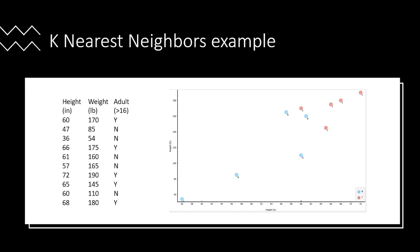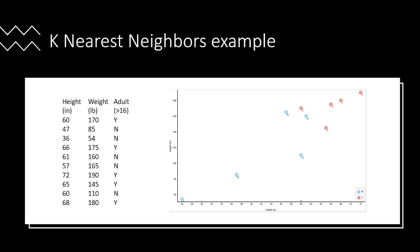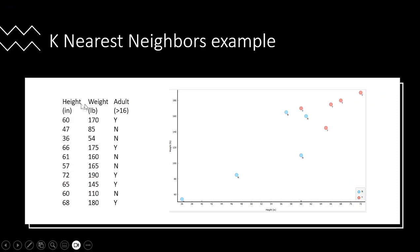Let me explain k-nearest neighbors using data on height and weight. The x-axis is height, the y-axis is weight, and the data points are coded: adults are red and children are blue. You can see that down in one area are clearly children and in another area are clearly adults, with a transition zone in between. We standardize the data because weight is typically a bigger number than height, so without standardization weight would have a bigger impact on the classification.